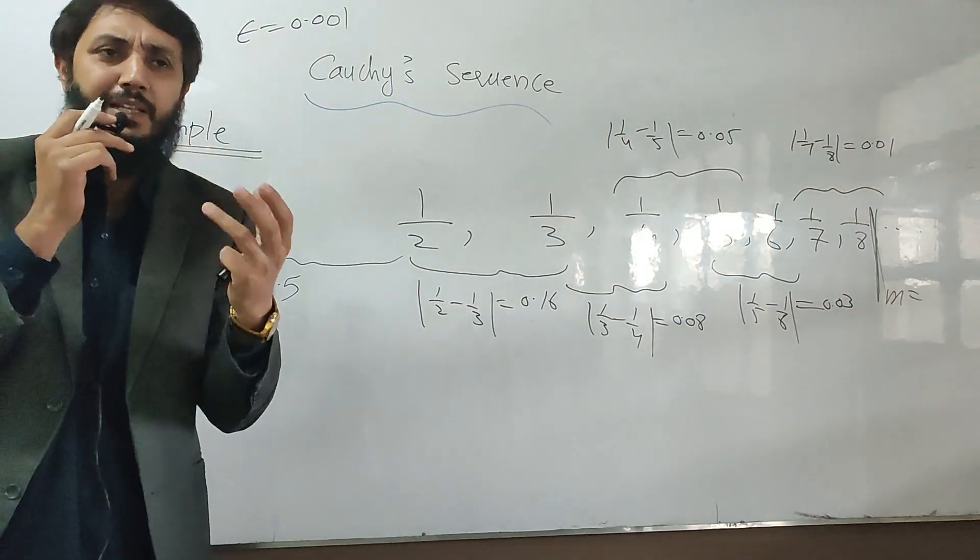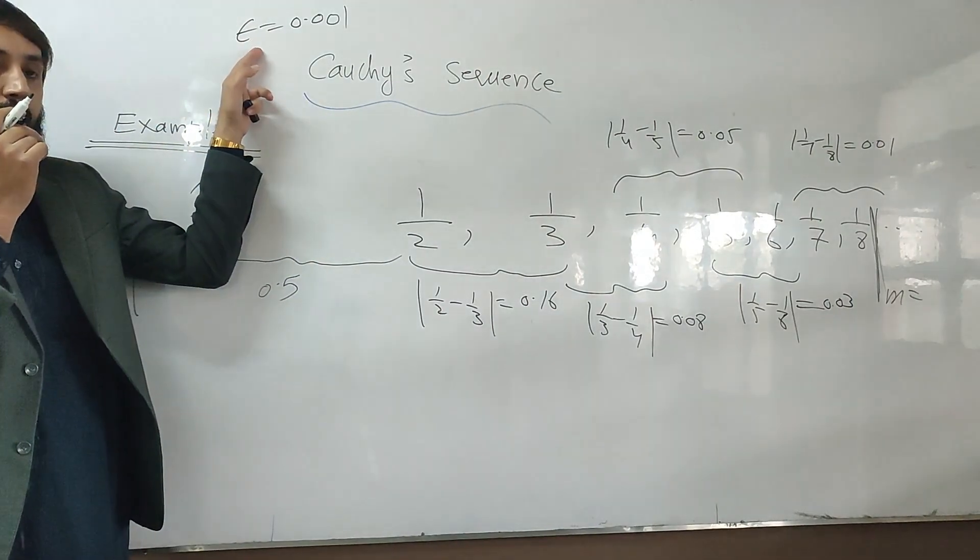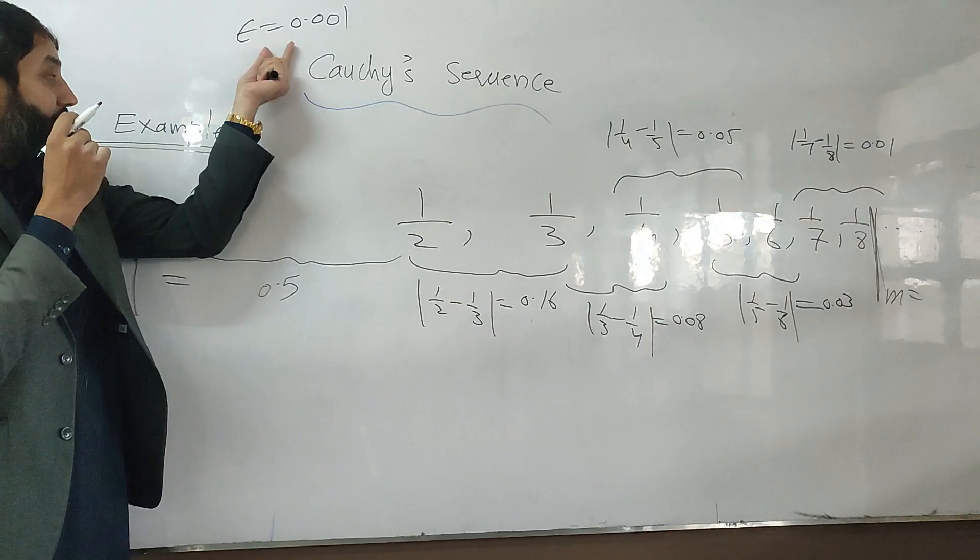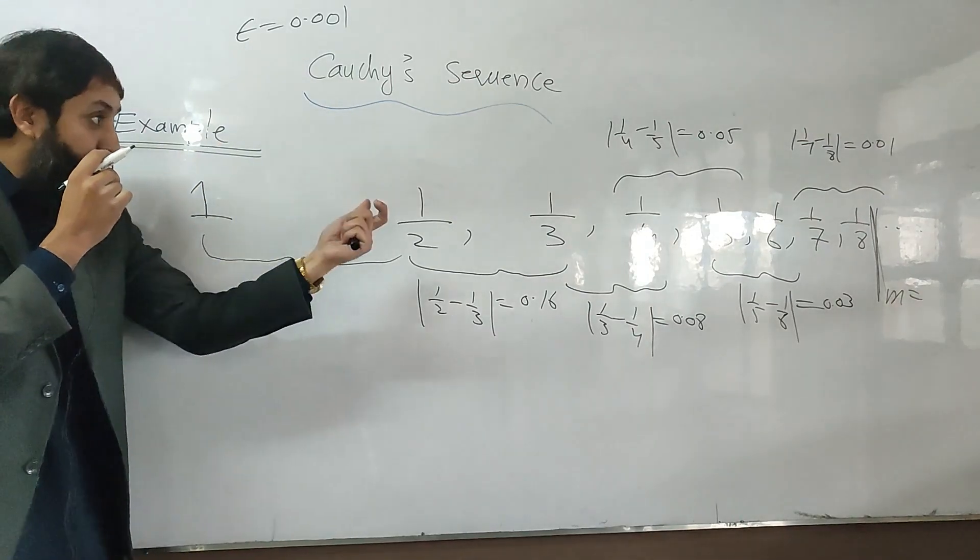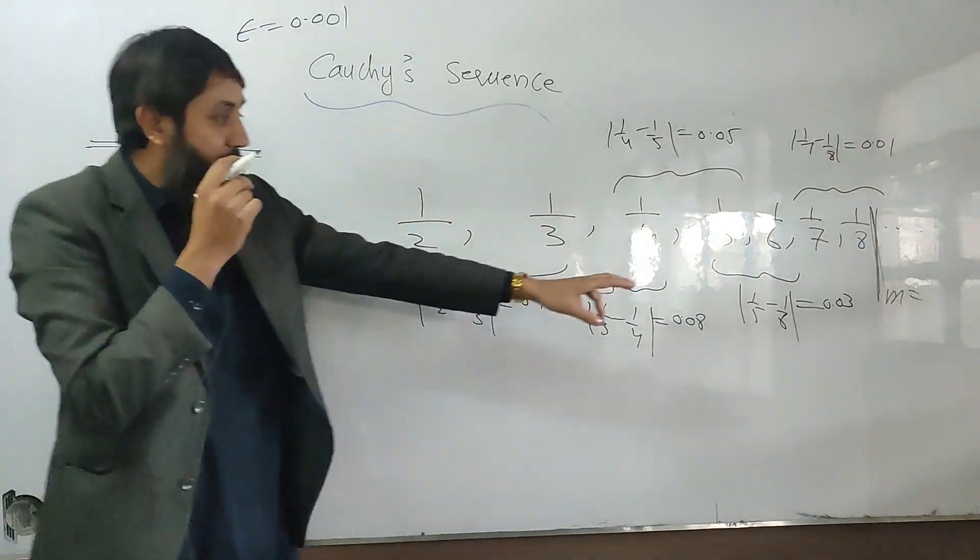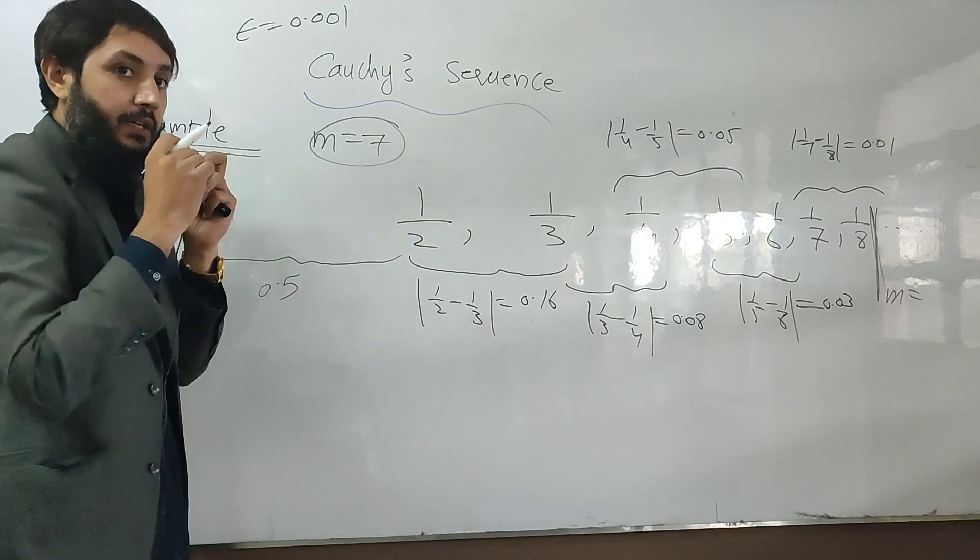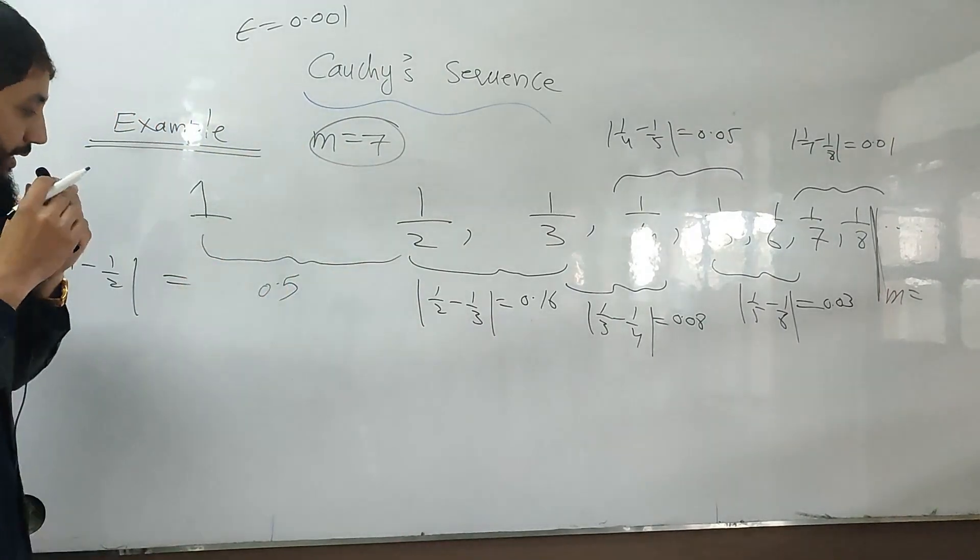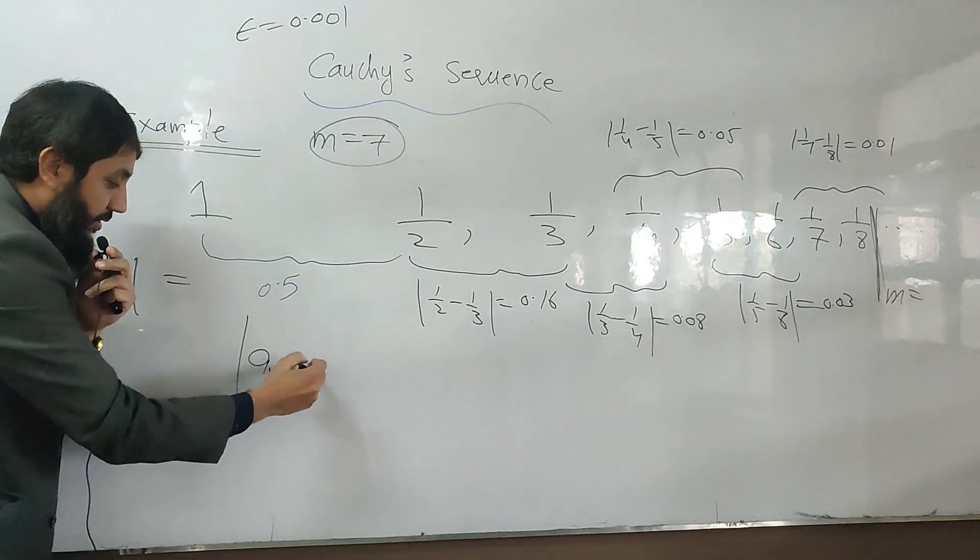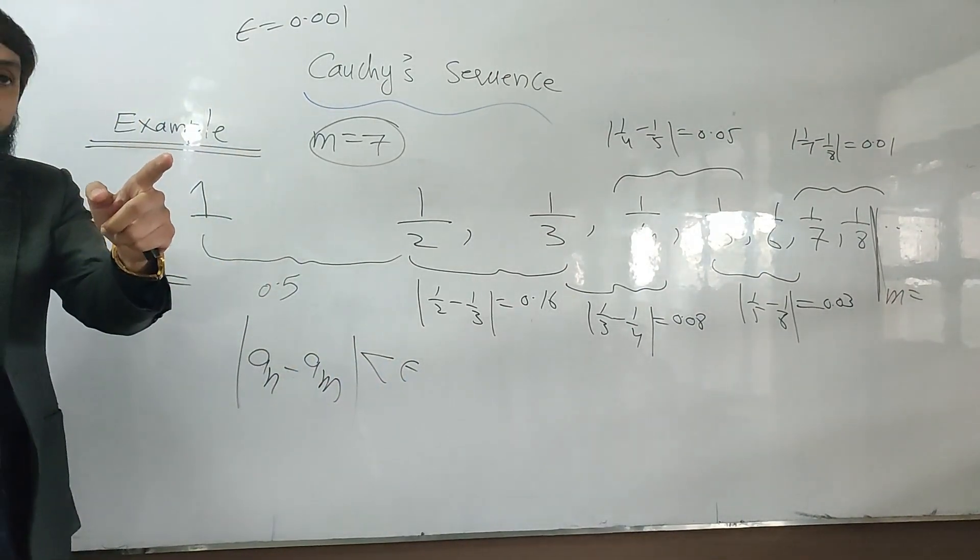Student gave me this margin. That if suppose the epsilon is this, do we have terms in the sequence so that the distance is even less than that? And I answer him, yes. After the seventh term, when m is seven, the distance between the terms of the sequence is less than your margin. Right?